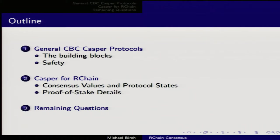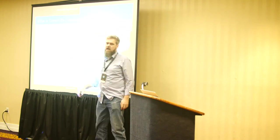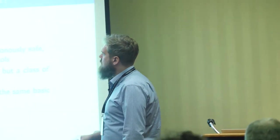Casper is used both by Vlad Zamfir and by Vitalik Buterin to describe their proof-of-stake algorithms. Vitalik's approach is to build something that looks pretty good, then bang on it and fix any bugs they find. Vlad's approach has been to start from first principles — hence his terminology of 'correct by construction.' Because he's starting from principles rather than a specific protocol, it's really a whole family of protocols.